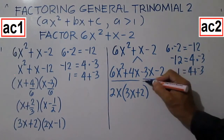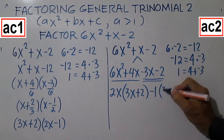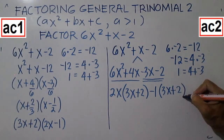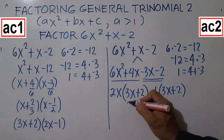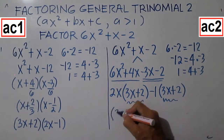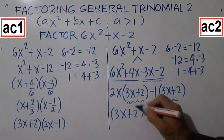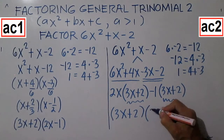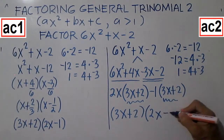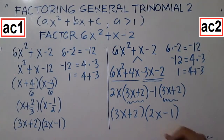Then factor the other two terms: you have negative 1 times 3X plus 2. Divide the entire expression by the common binomial 3X plus 2: you get 2X from the first group and minus 1 from the second. Note that we have the same answer: the factors are 3X plus 2 and 2X minus 1.